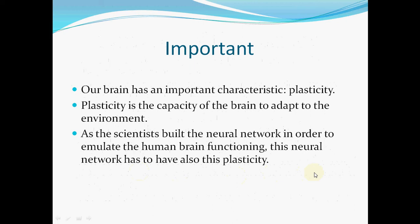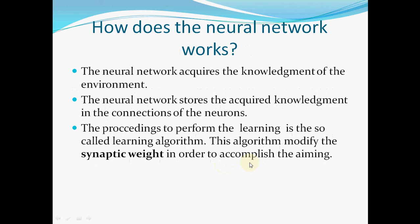Our brain has an important characteristic called plasticity. Plasticity is the capacity of the brain to adapt to the environment. As scientists build the neural network in order to emulate human brain functioning, this neural network must also have plasticity — it acquires knowledge of the environment and stores the acquired knowledge in the connections of the neurons. The procedure to perform the learning is the so-called learning algorithm. This algorithm modifies the synaptic weights in order to accomplish the aim.